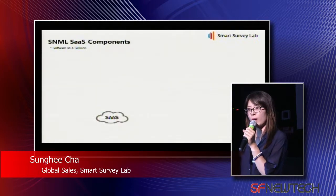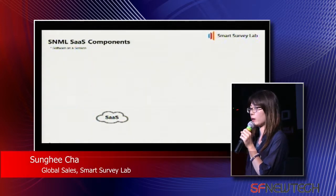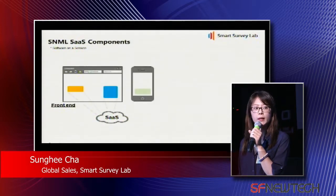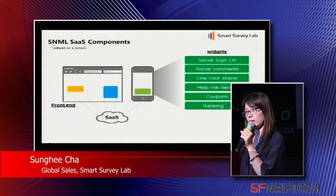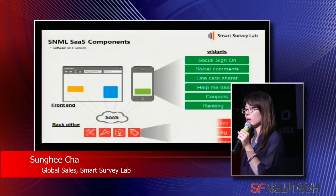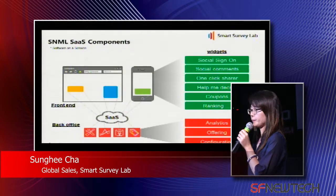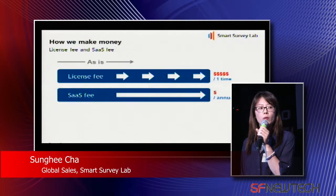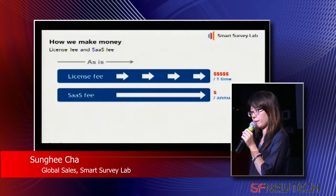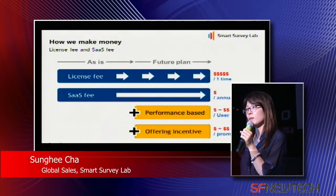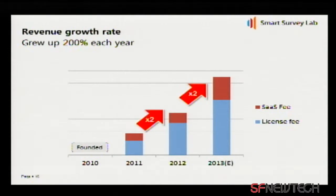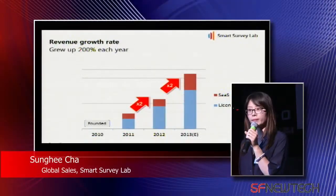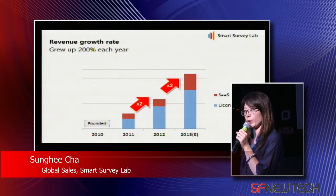Our solution comes as software as a service. On the front end, we provide various widgets such as social sign-in, social comments, and one-click sharing. On the back office, we provide analytics and offerings. We make money with in-store licenses and SaaS fees, and we are going to operate performance-based incentives. We've been profitable within six months of our launch, and we have been growing 200% each year.